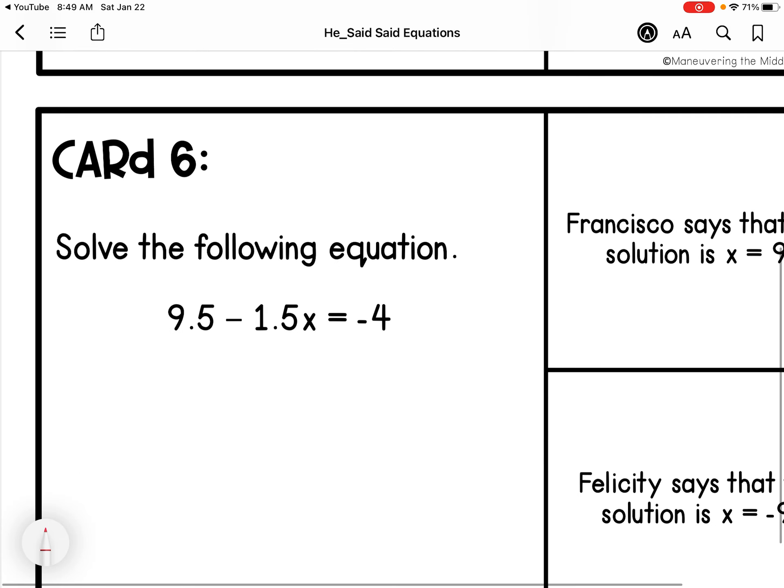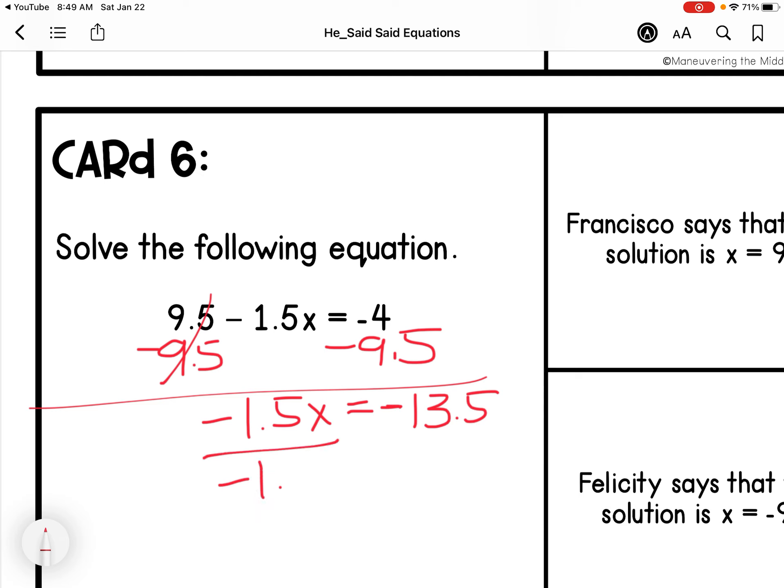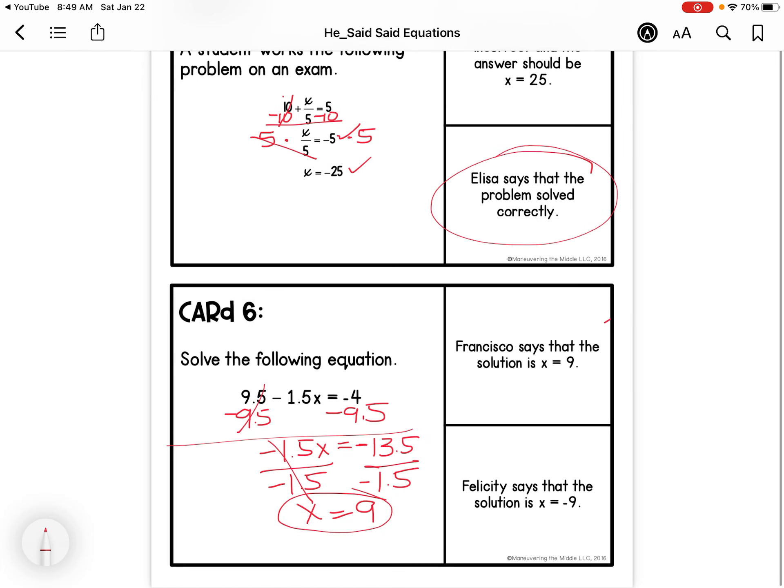Then we're going to solve this problem. So we're going to subtract 9.5 on each side. We get negative 1.5 X. Signs are the same, so I'm actually going to add negative 13.5. I'm going to divide by negative 1.5 on each side. So X equals a positive 9 because the signs are the same and I'm dividing.